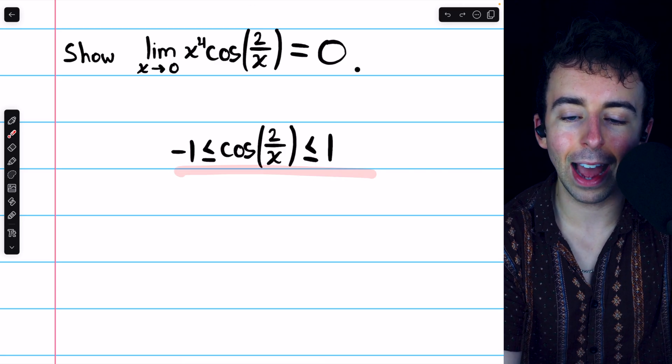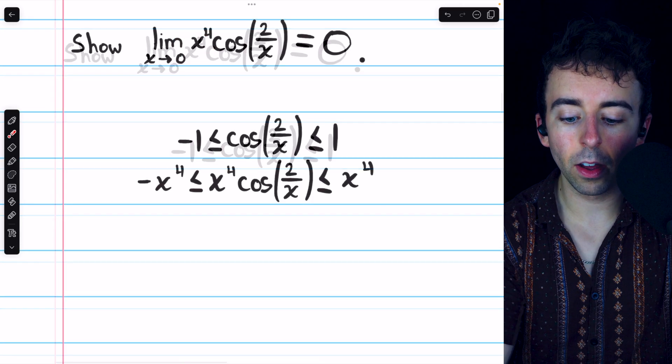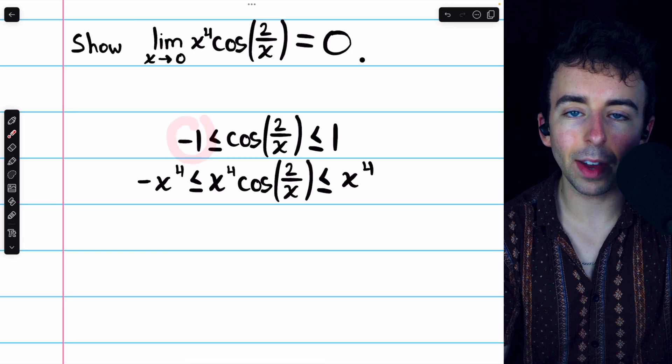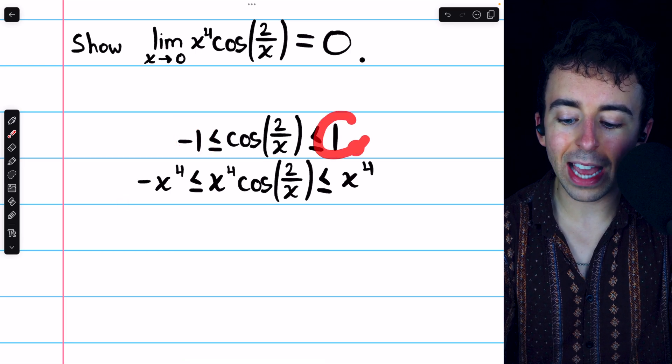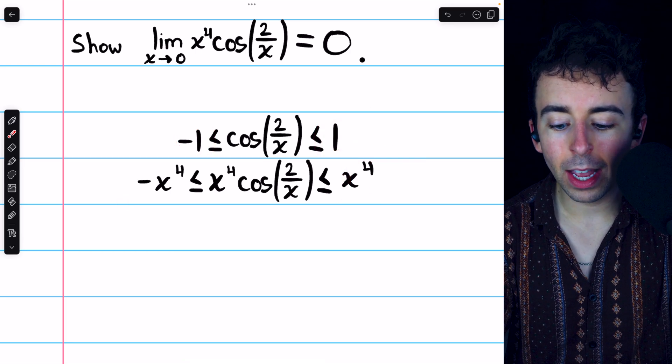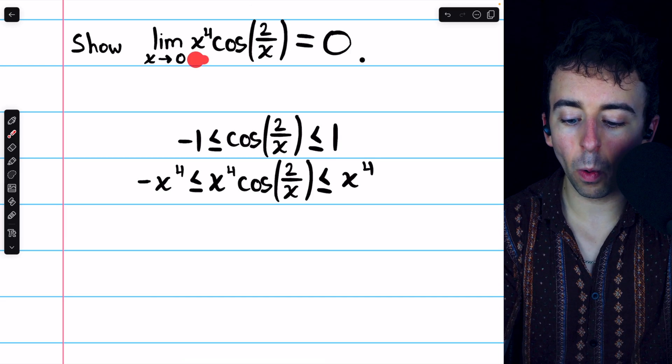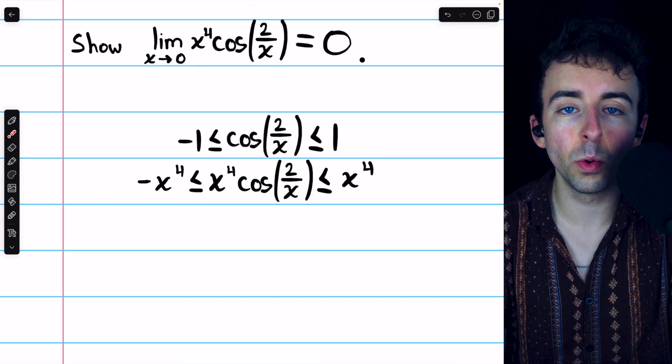To do that, we simply multiply through by x to the power of 4. Then, on the left, we have negative x to the 4. On the right, we have positive x to the 4. And in the middle, we have x to the 4 times cosine of 2 over x.